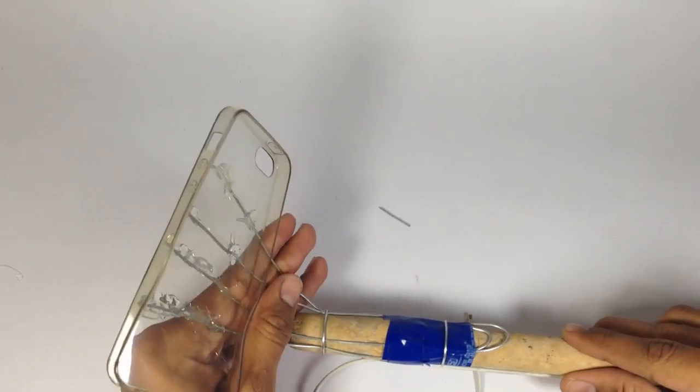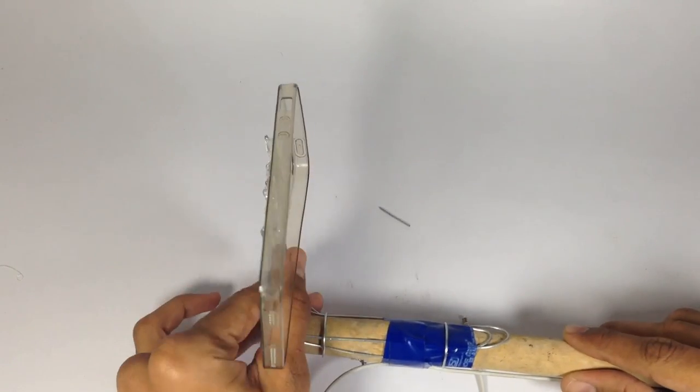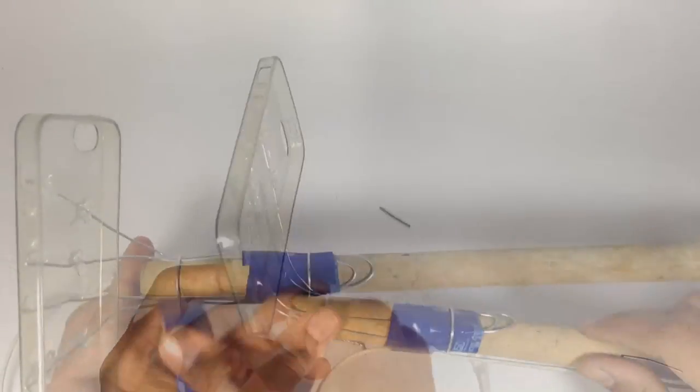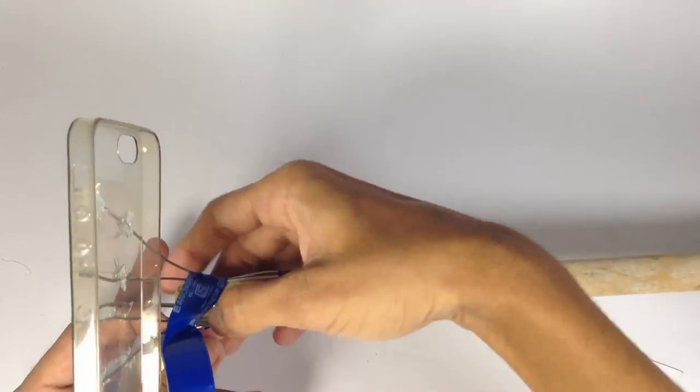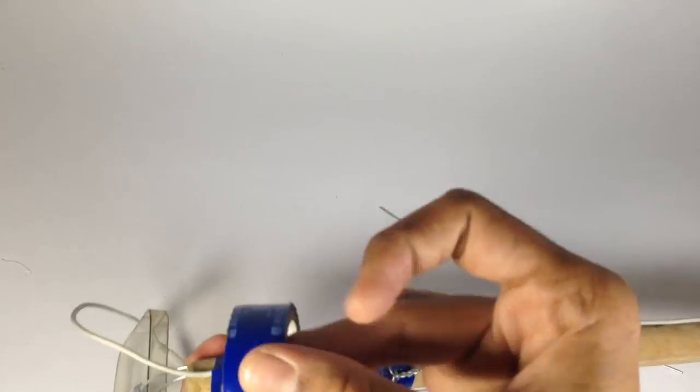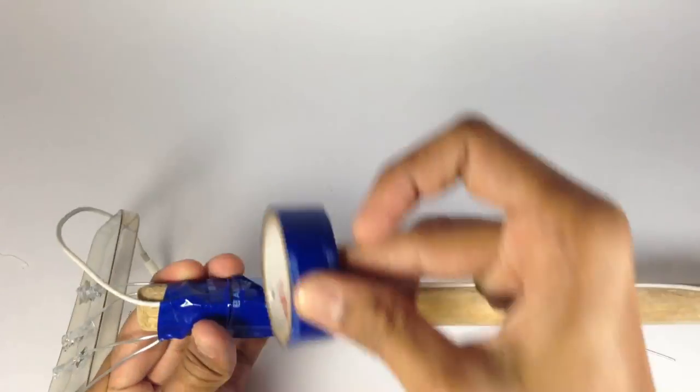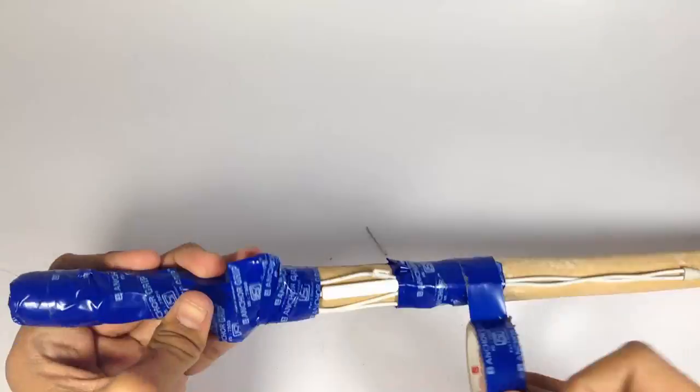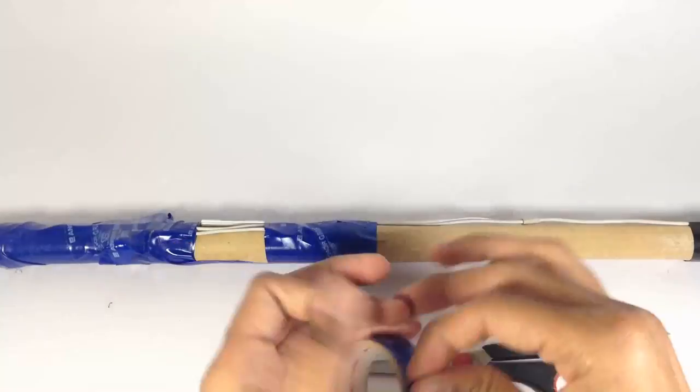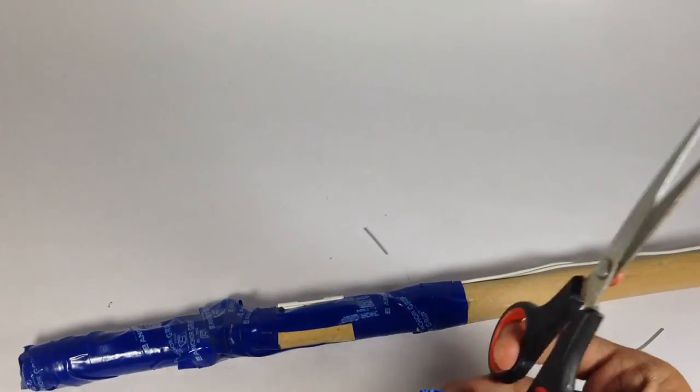Now position the cover for the best angle of photography. Our selfie stick is ready and you can customize it as per your choice. I am using normal gum tape, but you can use anything to make it more attractive.